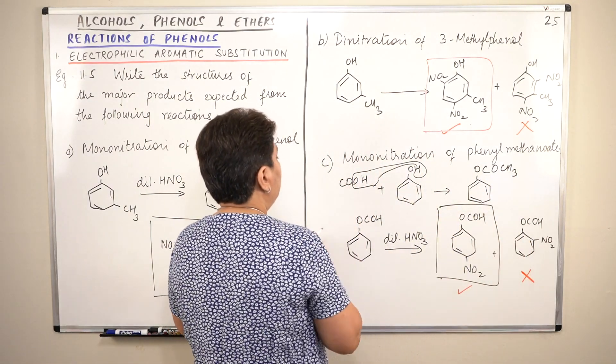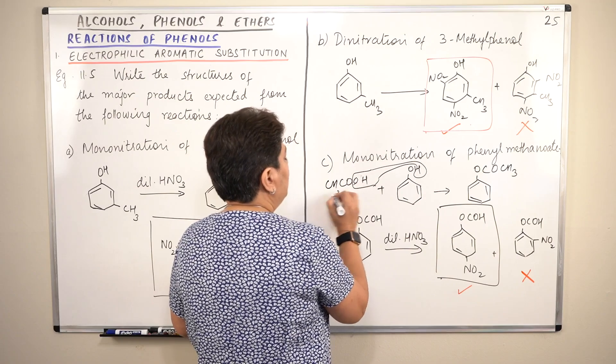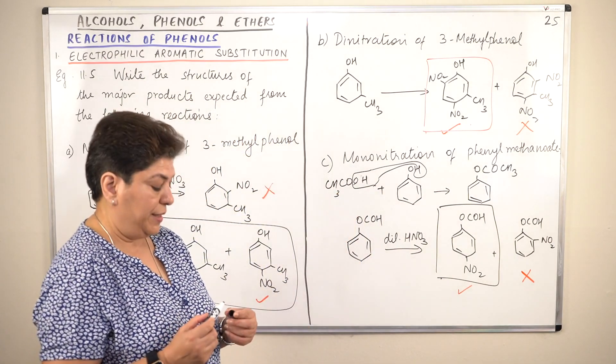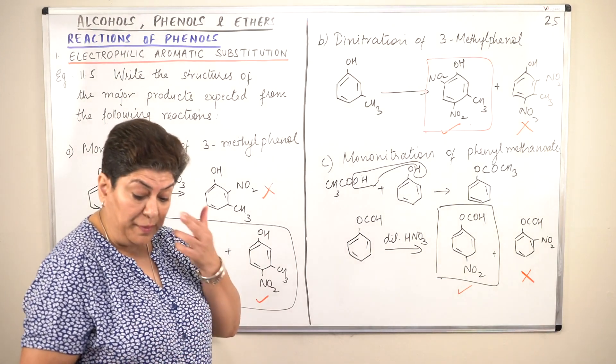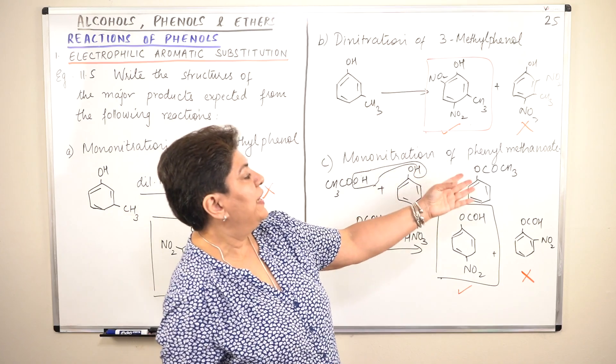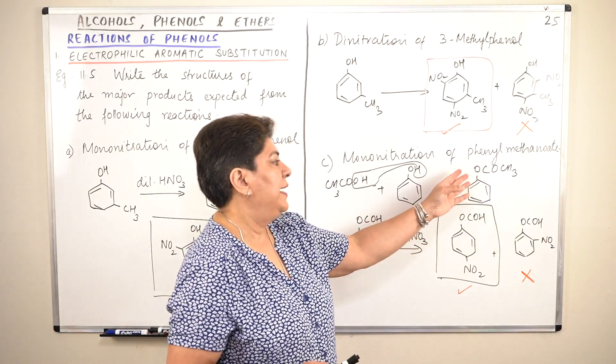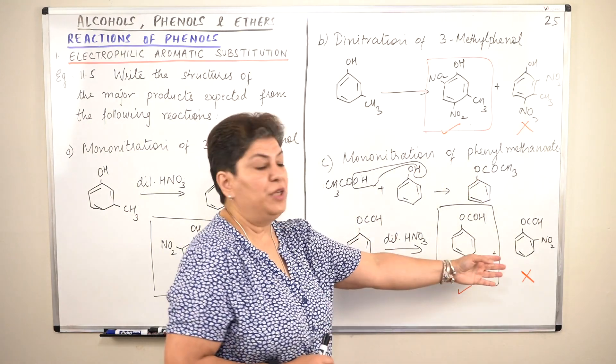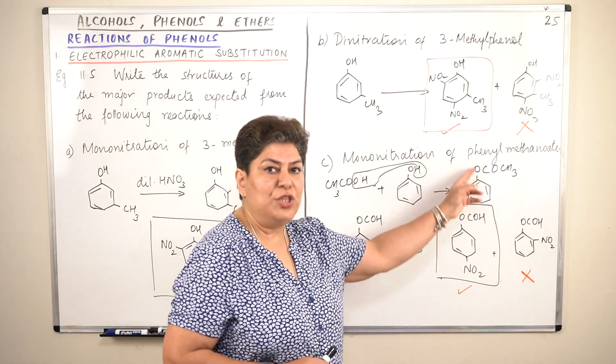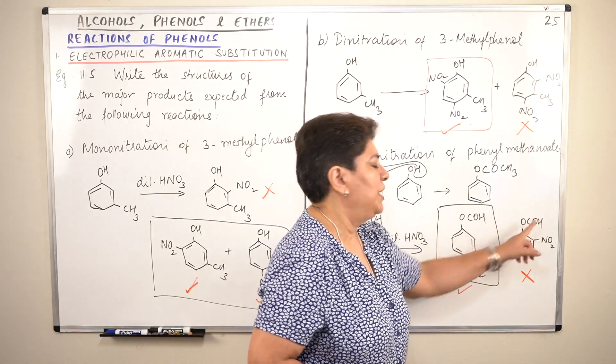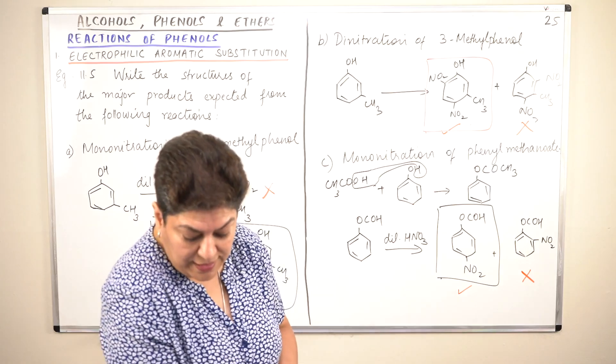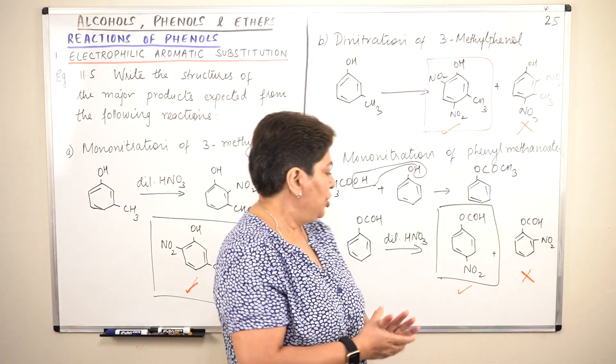Which means that this should have been CH3. CH3COOH is ethanoic acid. It's not methanoic acid. So this must have been some error. Because if it is mononitration of phenyl methanoate then this should be your answer. But if it was phenyl ethanoate then of course this would be your reactant and your product would have CH3 here instead of H. So that is what I wanted to explain to you.